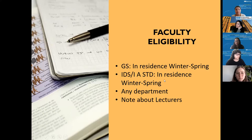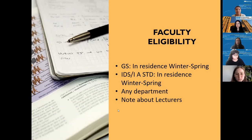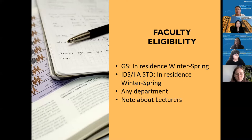The faculty member can technically be from any department — it doesn't have to be your major department. The faculty member should be a permanent faculty member. Sometimes students ask about lecturers. You can go through a petition process through our departments to see if the lecturer would be approved. You don't want to just assume that if you find a lecturer we're going to approve it. You would want to work with your major department advisor and go through a petition process for that.